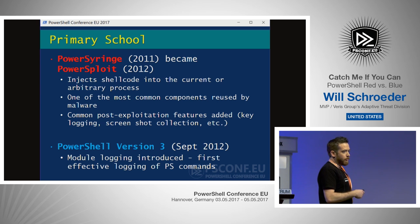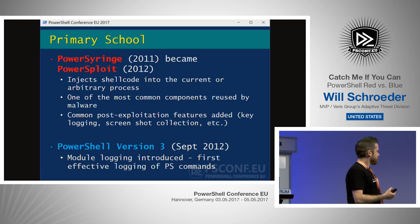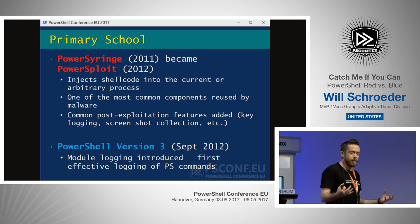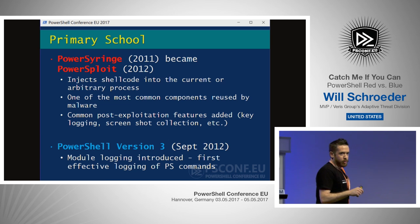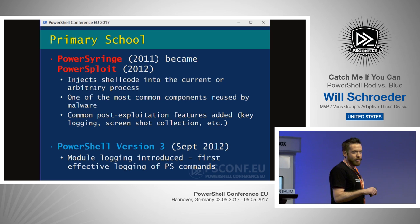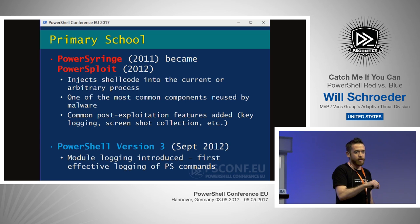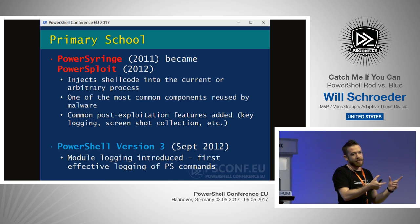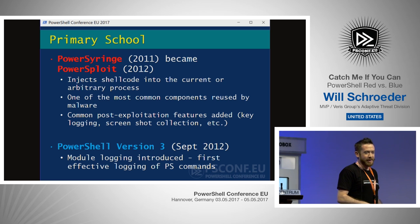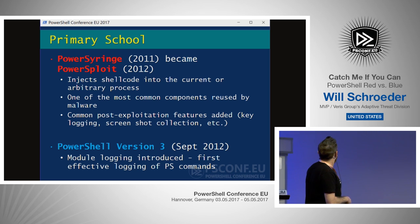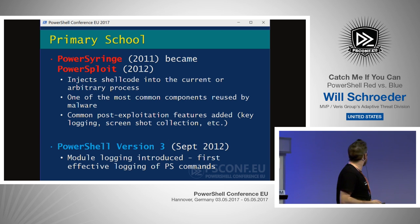One of the most common pieces in PowerSploit is Invoke-Shellcode, which allows you to inject position-independent code into your current process or a foreign process. A fun thing that happened a few years ago: Matt got annoyed that attackers were downloading it directly from GitHub, so he changed Invoke-Shellcode to Invoke-dash-dash-Shellcode. The original Invoke-Shellcode just popped up a message box that said 'I'm a stupid attacker that downloads stuff straight from the Internet.' There were a bunch of GitHub issues and people were confused — it was pretty funny.